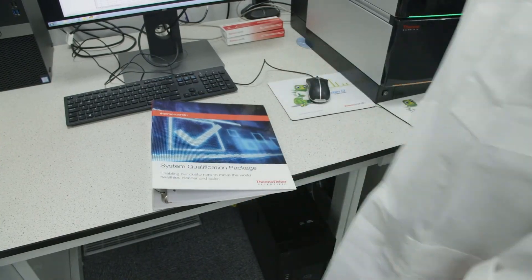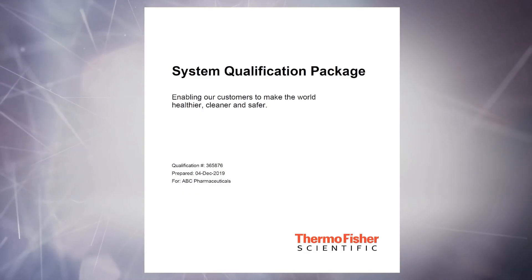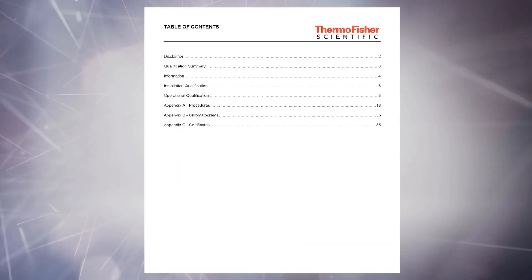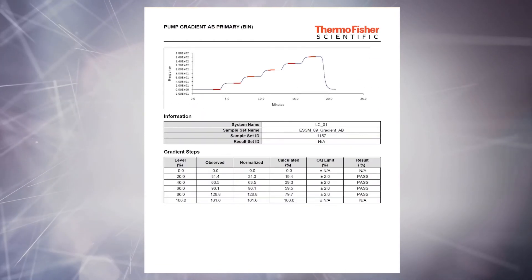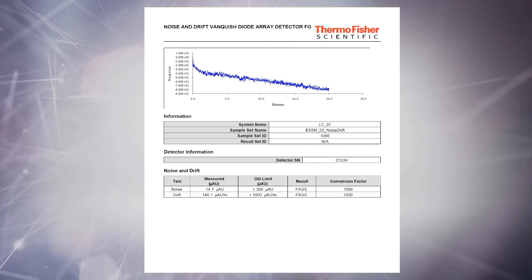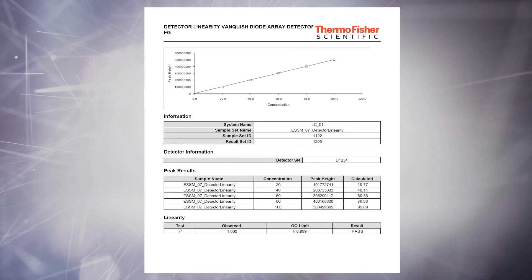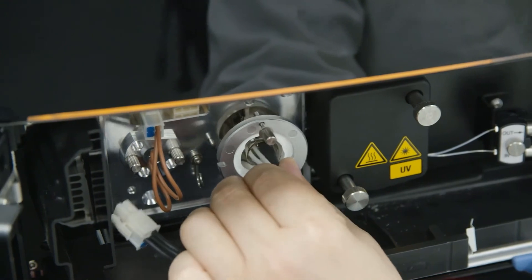Once all IQ and all OQ procedures have been completed, all external reports and documentation including chromatograms, test equipment and certificates and training documentation are collated and provided in an audit-ready electronic file or binder.